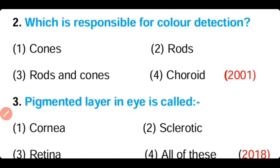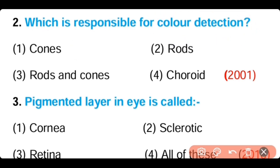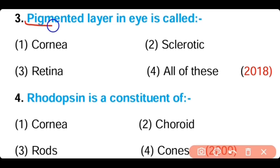Question number two: Which is responsible for color detection? (a) cones, (b) rods, (c) rods and cones, (d) chloride. The answer is option one — cones are responsible for color vision.